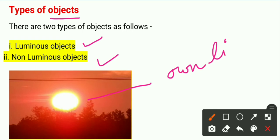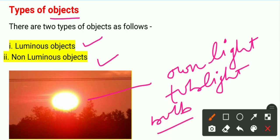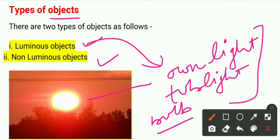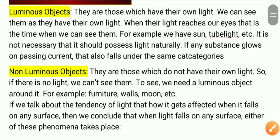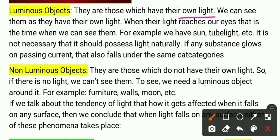Luminous objects include the sun, tube light, and bulb — these all come under the luminous category. They are those which have their own light; when their light reaches our eyes, that is when we can see them. It is not necessary that the light be natural — a bulb has a filament, and when we switch it on, it emits light. So luminous means it has its own light.